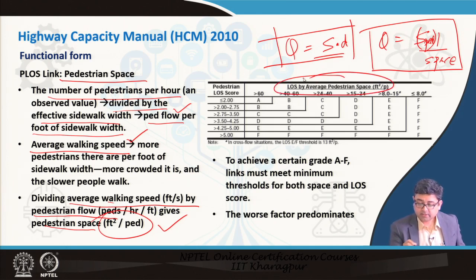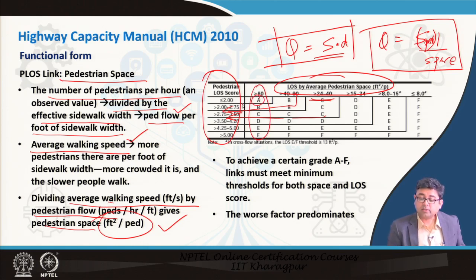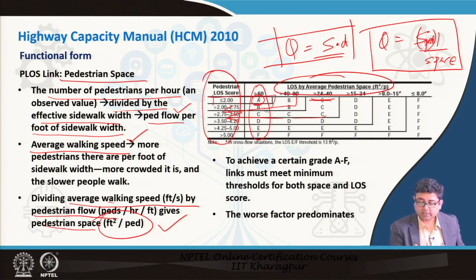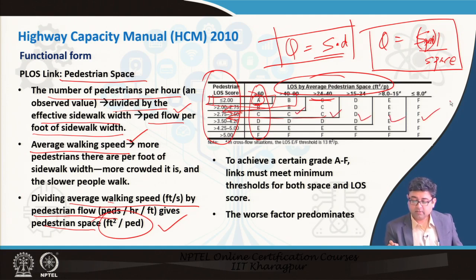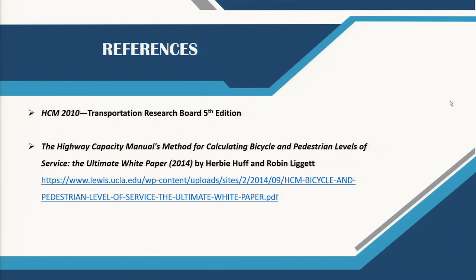For each given pedestrian space you will have a corresponding PLOS score. It is very difficult to achieve pedestrian level of service A, which requires a score less than 2 and a space greater than 60 square feet per pedestrian — so we do not usually design for level of service A. That brings us to the end of this lecture. We will continue in the next session covering the segment and the facility PLOS scores, along with worked examples.